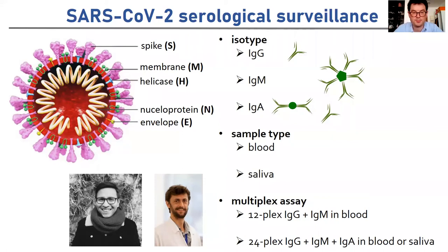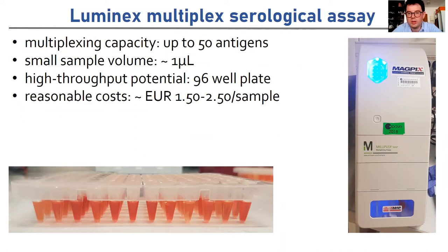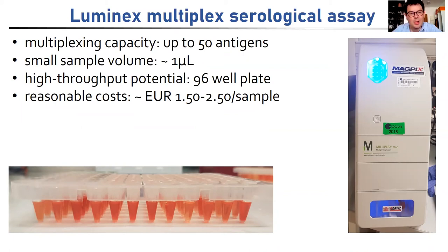Today I'm going to show data from the 12-plex assay. We use a Luminex multiplex assay — specifically the MagPix machine. It is a bead-based assay, which we like because of its multiplexing capacity. In a single small volume sample of one microliter of serum, we can accurately measure antibody responses to 50 different antigens. We run this on 96-well plates, so we can scale this up with reasonably high throughput. The cost is €1.50 to €2.50 per sample depending on how highly we multiplex.